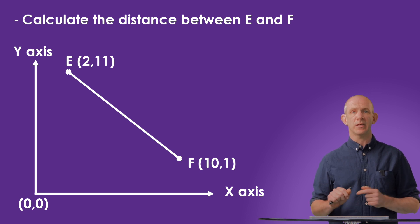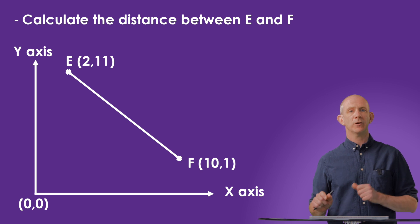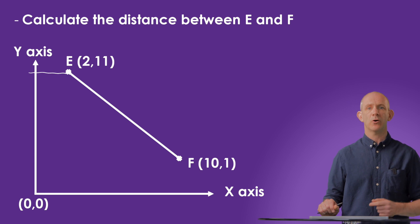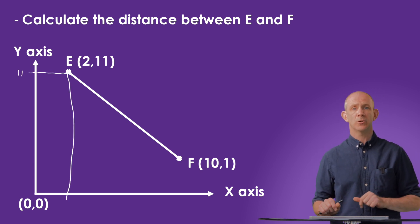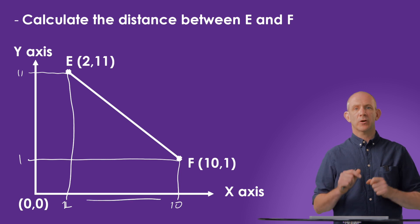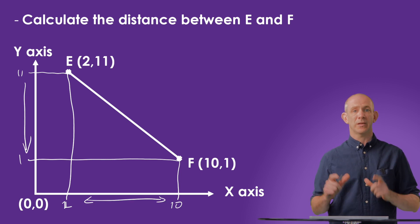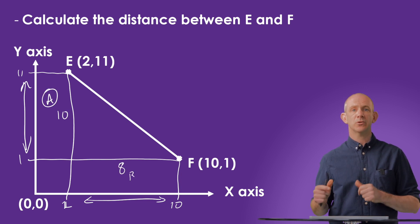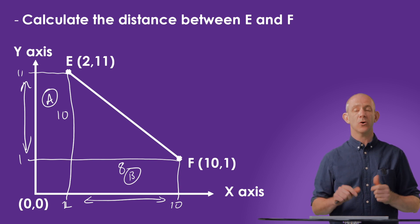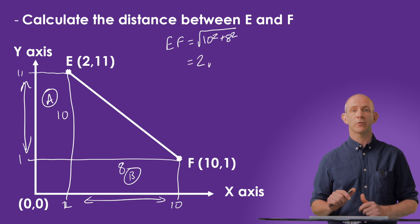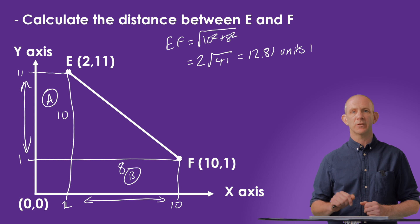In this one we're asked to find the distance between E and F. We're given two sets of coordinates: E is (2, 11) and F is (10, 1). Mapping these coordinates to the axes, we can calculate the triangle formed: 10 on the A side and 8 on the B side of this right angle triangle. Substituting into our formula, EF equals the square root of 10 squared plus 8 squared, which gives us 2 root 41, or pressing SD, 12.81. So EF is 12.81 units long.